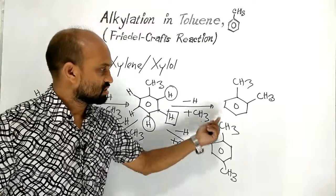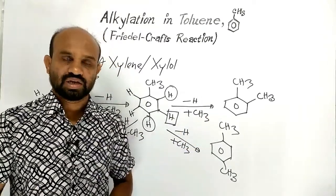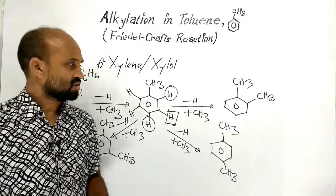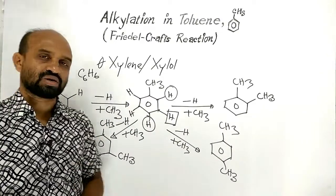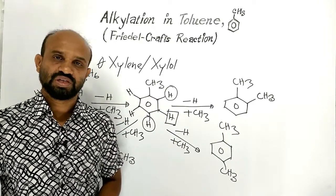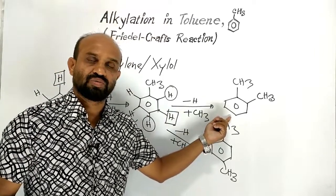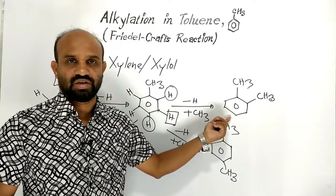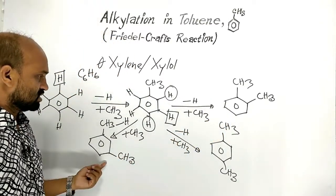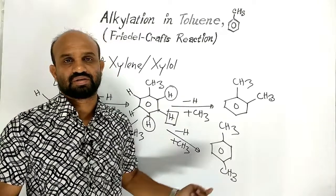These dimethylbenzenes are called xylenes. The definition of xylene: when two hydrogen atoms in benzene are replaced by two methyl groups, the compound formed is called xylene. So these compounds — all three of them — are xylenes.